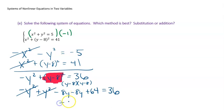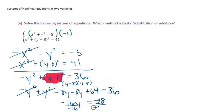Subtracting 64 from both sides: −16y = 36 − 64 = −28. Dividing both sides by −16: the negatives cancel, and both 28 and 16 divide by 4, giving y = 7/4. Getting a fraction makes me a little nervous, but let me verify by checking the work from the beginning. Yes — everything checks out: the x squareds cancel, the y squareds cancel, and 36 − 64 = −28.